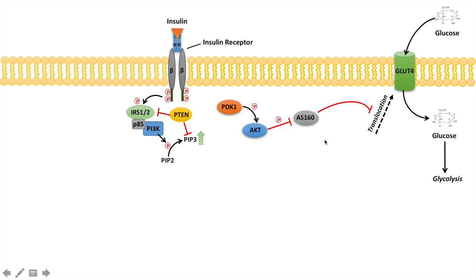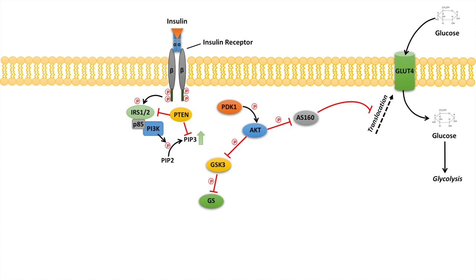AKT's inactivation of AS160 is not the only thing that occurs. AKT also phosphorylates GSK3 — glycogen synthase kinase 3 — and inhibits it. GSK3 normally phosphorylates and inactivates glycogen synthase (GS), which is a key enzyme in glycogen synthesis. By inhibiting GSK3, AKT activates glycogen synthase — so AKT not only allows glucose to enter the cell and undergo glycolysis, but also activates glycogen synthesis to store that glucose.